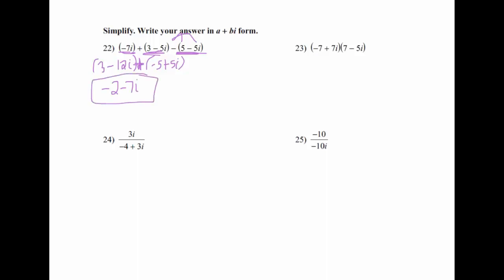For problem 23, FOIL: negative 7 times 7 is negative 49. Negative 7 times negative 5i is positive 35i. 7i times 7 is 49i. 7i times negative 5i is negative 35i squared. Change i squared to negative 1 — that makes it plus 35 instead of minus 35. So negative 49 plus 35 is negative 14. 35i plus 49i is 84i. Answer: negative 14 plus 84i.